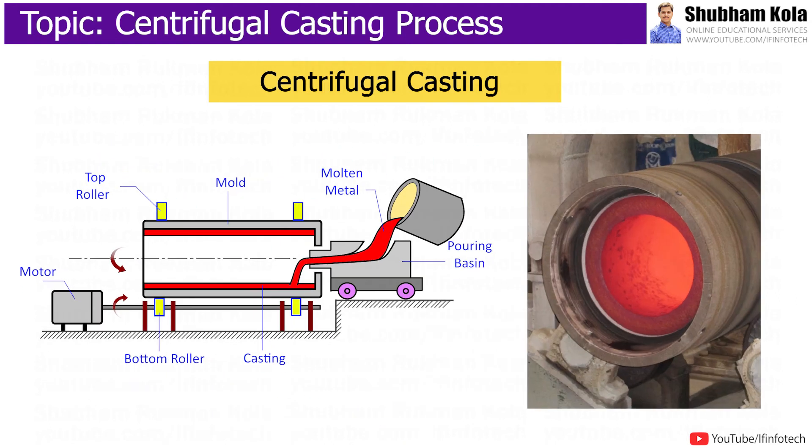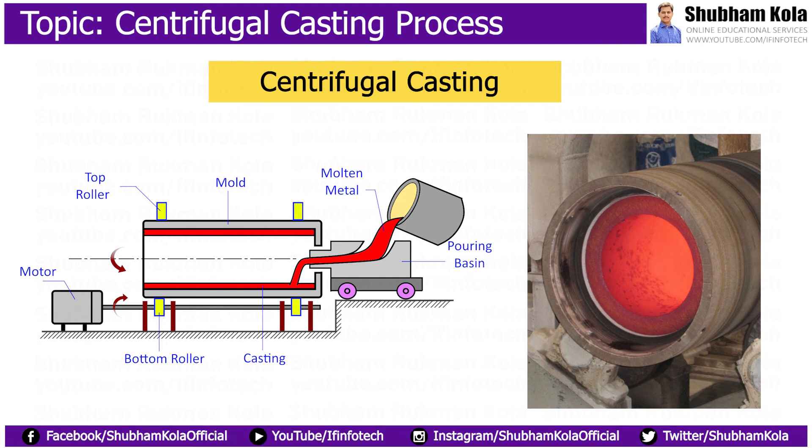As the die begins to fill, the dense molten metal is forced to the wall of the spinning die. Once the casting has solidified, the part is removed from the die and residual impurities are machined away, resulting in a defect-free structure without cavities or gas pockets.